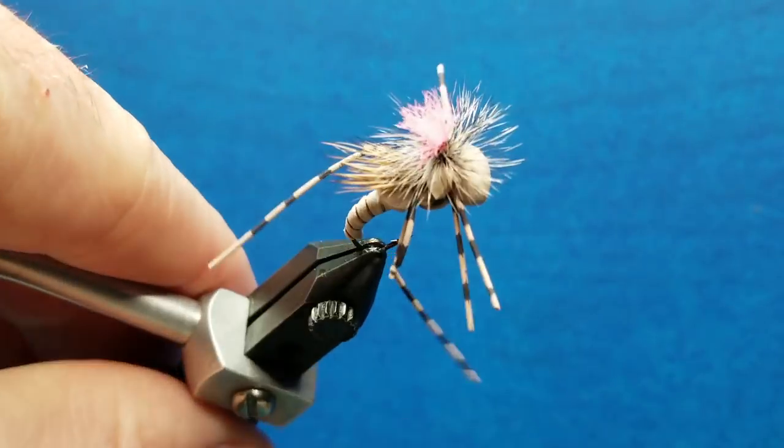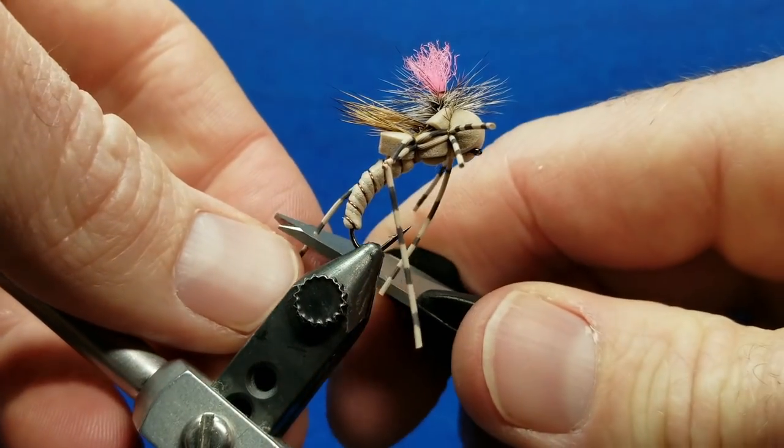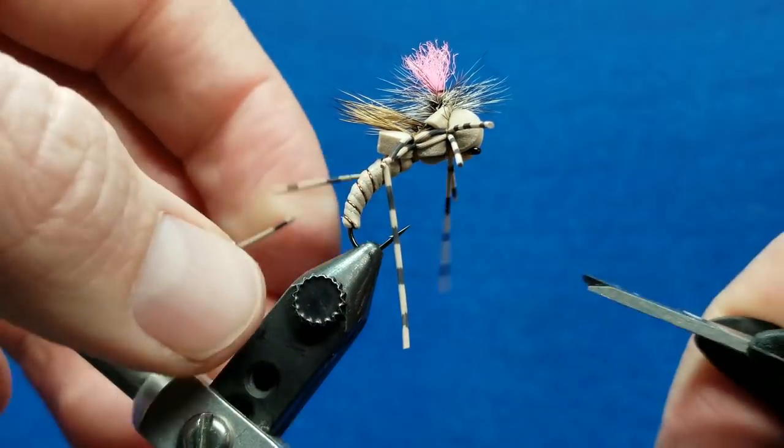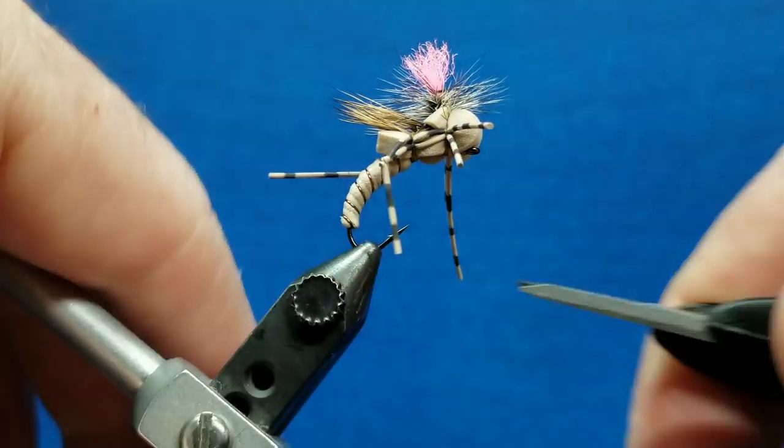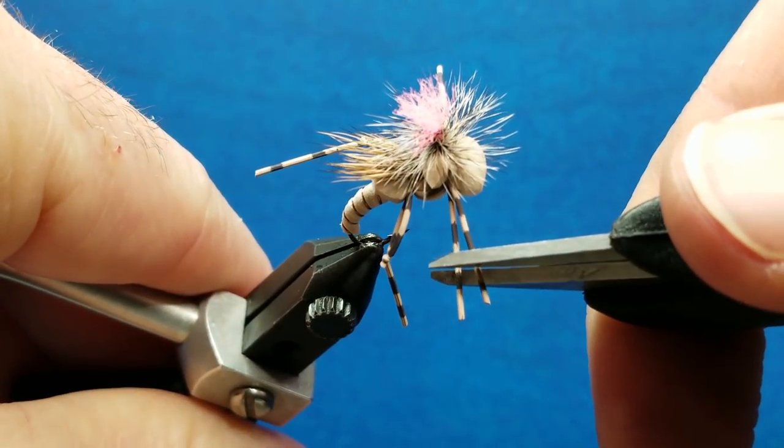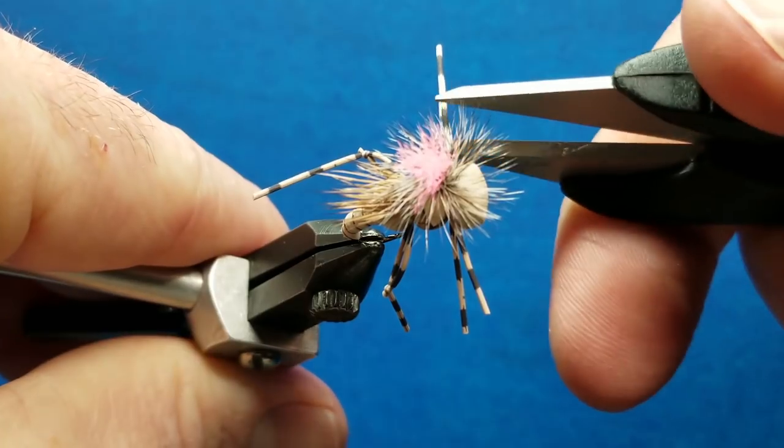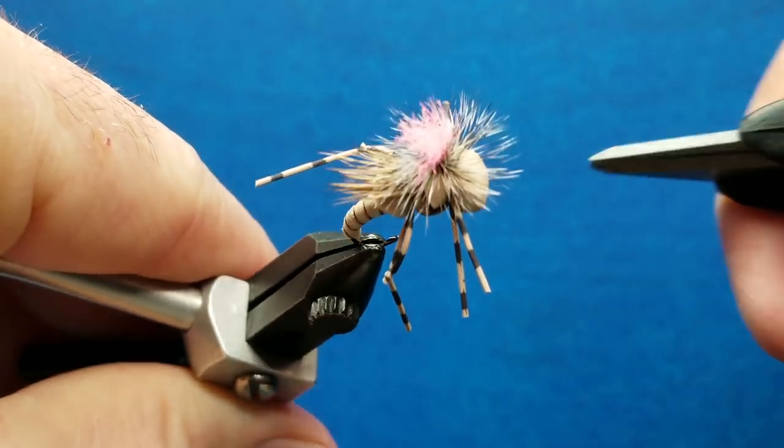So when I look at the length of these legs here, I'm going to trim these back legs to where they're about even with the bottom of the abdomen. I'm going to trim these front legs to where they'll about line up lengthwise with the joint on the back leg.